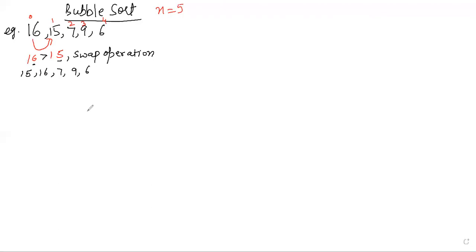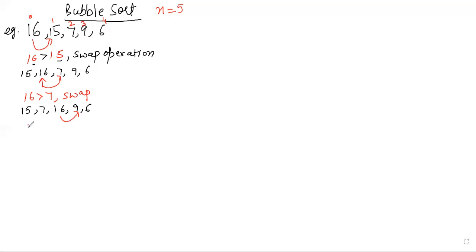Nothing happened with the rest of the elements. Then we move our pointer to the next element, 16. Now we do the comparison between 16 and the adjacent element 7. Since 16 is greater than 7, we perform a swap operation. Then we compare 16 and 9 — again 16 is greater, so we swap again. The new array becomes 15, 7, 9, 16, and 6.